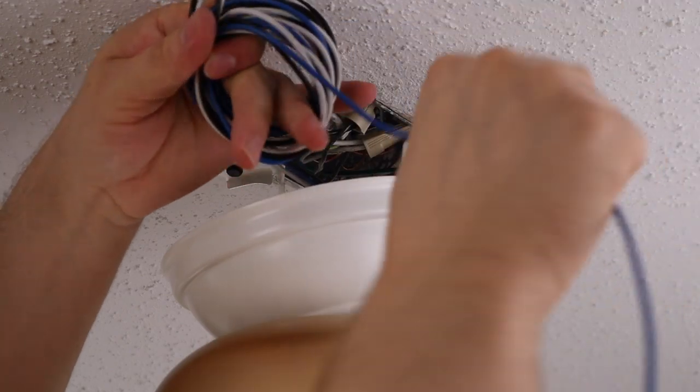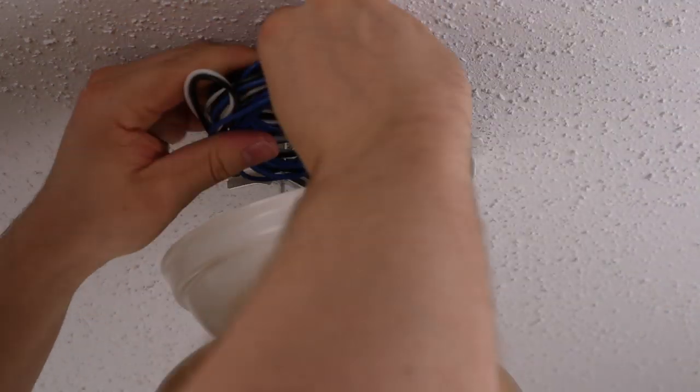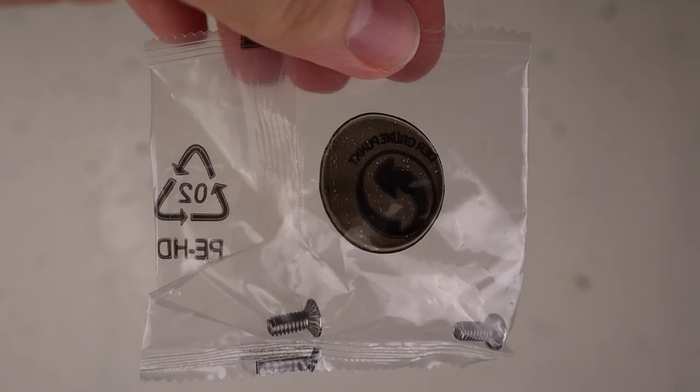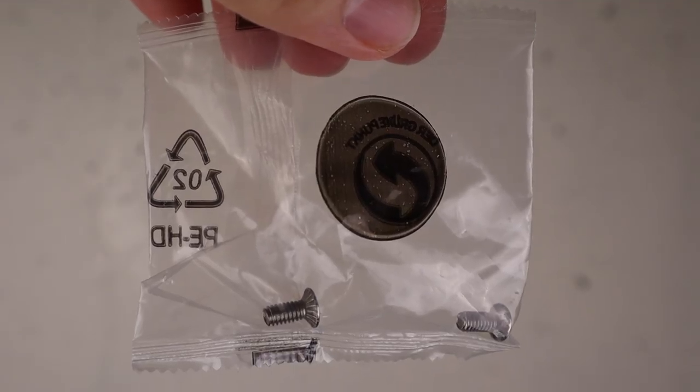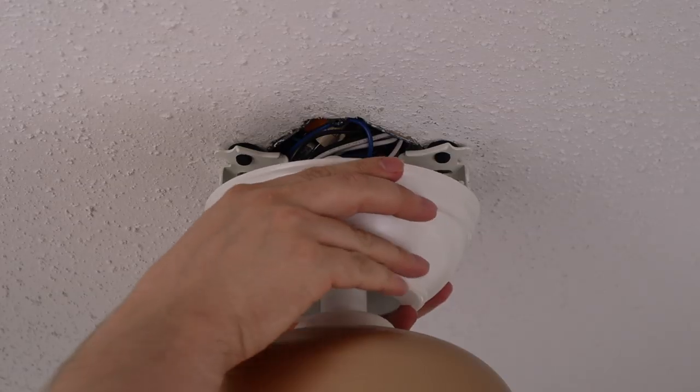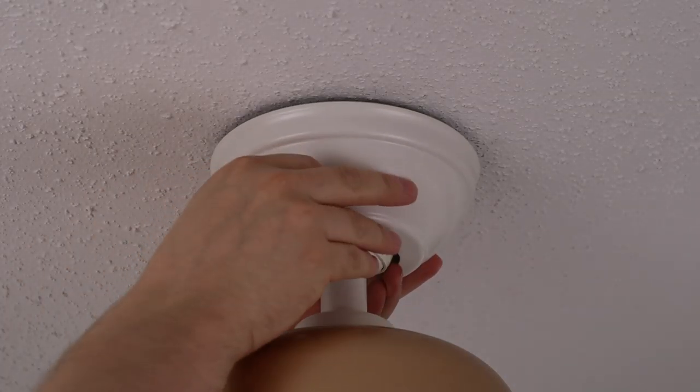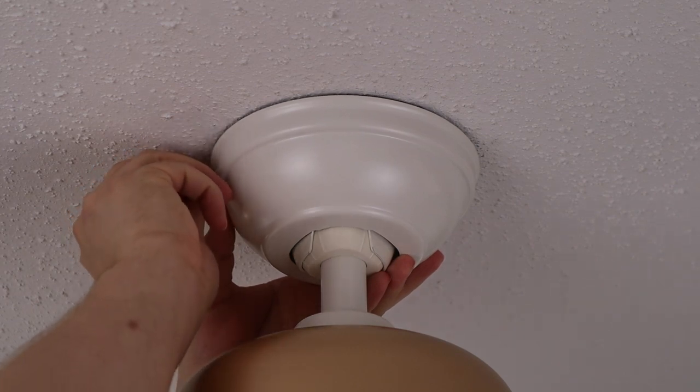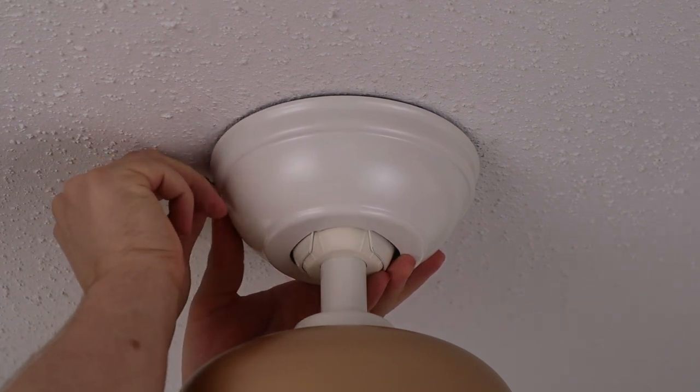Locate the canopy screws in the bag marked with a circle. Raise the canopy, aligning the opening in the bottom with the ball and mounting bracket. Insert the two canopy screws, then tighten both securely.